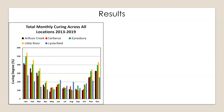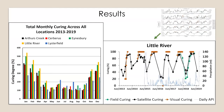The graph on the left shows the curing calculated from satellite data. We can see that December, January, and February have the highest curing degrees. The graph on the right compares the grassland curing calculated by satellite, ground, and visual, along with the antecedent precipitation index.